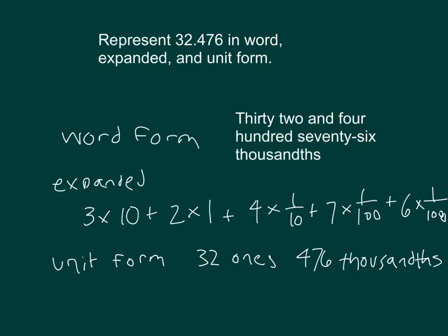We also could have broken that apart further: 3 tens, 2 ones, 4 tenths, 7 hundredths, and 6 thousandths.